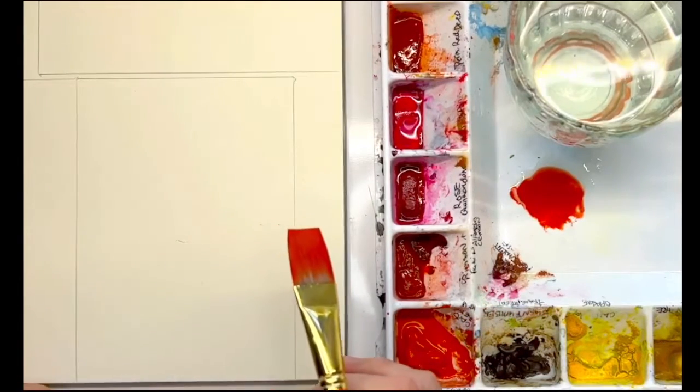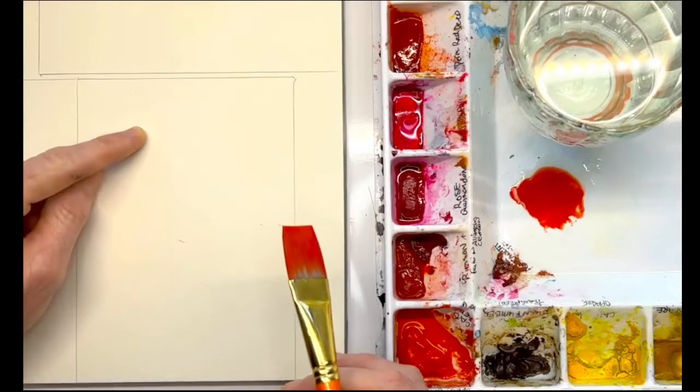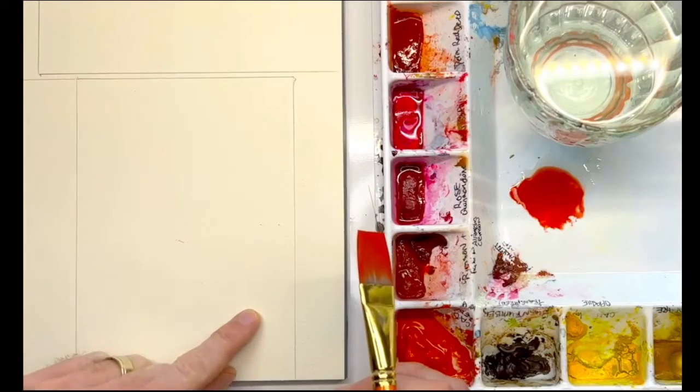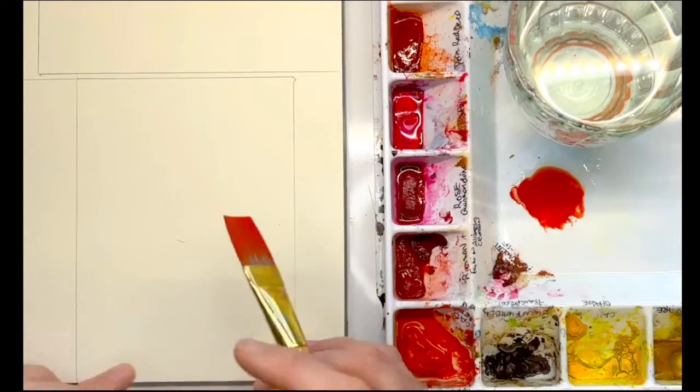This red cardinal is pretty long, so you want the head to be pretty much up here and then the tail will come all the way down to here.